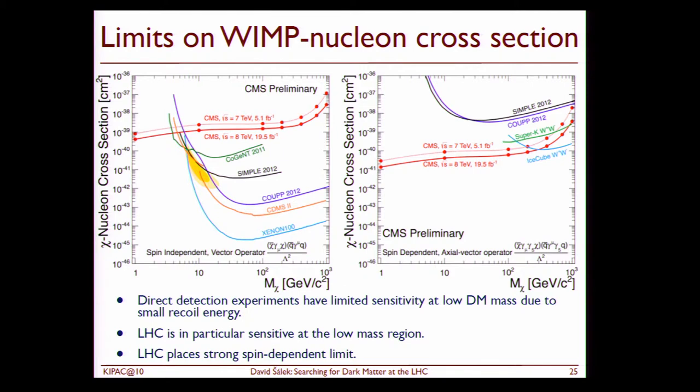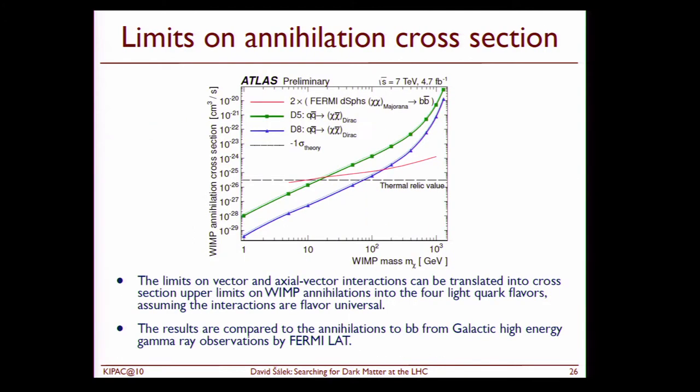Then we can also translate our limits into the WIMP nucleon cross section and contribute to these plots which we already saw today. What you see in particular is that the LHC limits are strong, really strong at low WIMP mass. And this is because we don't have any limited systematics due to a small recoil energy as the direct searches have. And for the spin dependent results, the results are very competitive in the whole mass range. Then we can also actually put limits on the annihilation cross section and compare therefore between LHC and the indirect searches. And again we can indicate the thermal relic line here and see whether the limits we have actually are fine if you have only one operator or if more operators are needed.